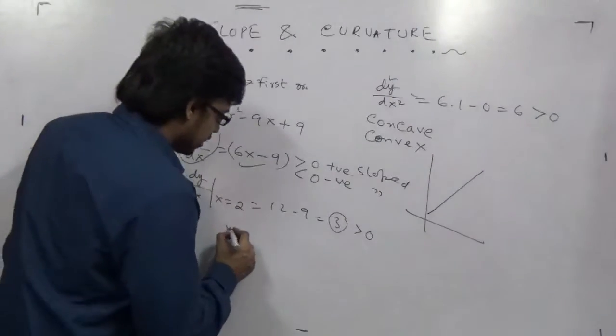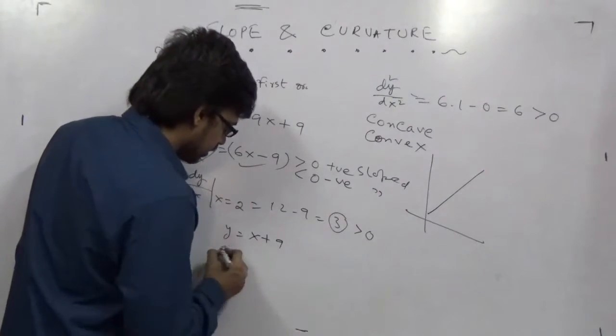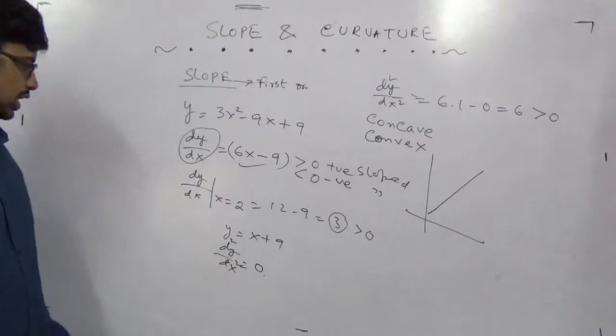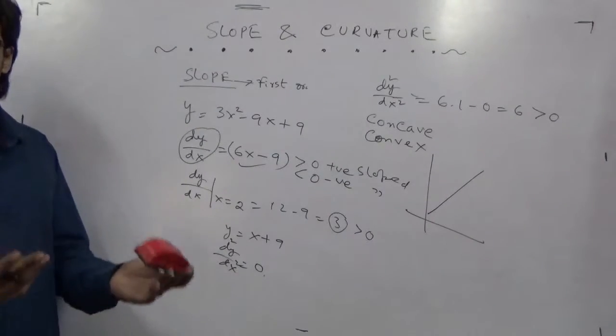If it is a linear function like y = x + 9, d²y/dx² will give us 0. That's why a linear function has zero curvature.